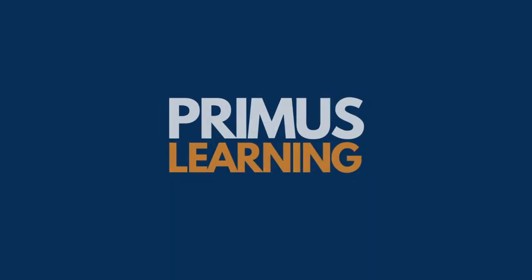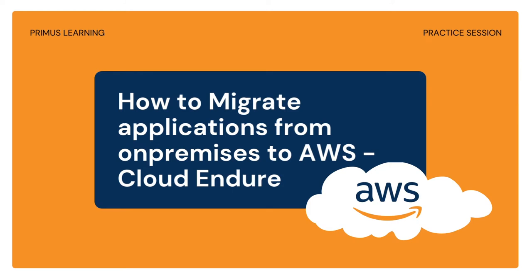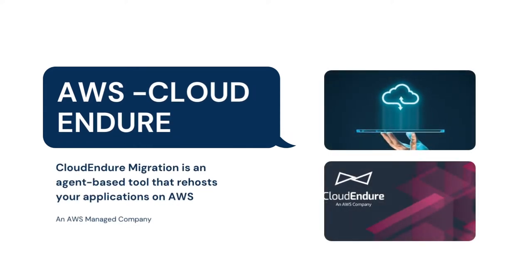Hi guys, welcome to Primus Learning. Today I want to show you how to migrate resources from on-premises to AWS — how to migrate a server with applications installed inside to the AWS platform. This video is on demand; many people have asked for it. We're using CloudEndure, which is an AWS managed company, to do this migration. I'll do a subsequent video using the AWS Application Migration Tool.